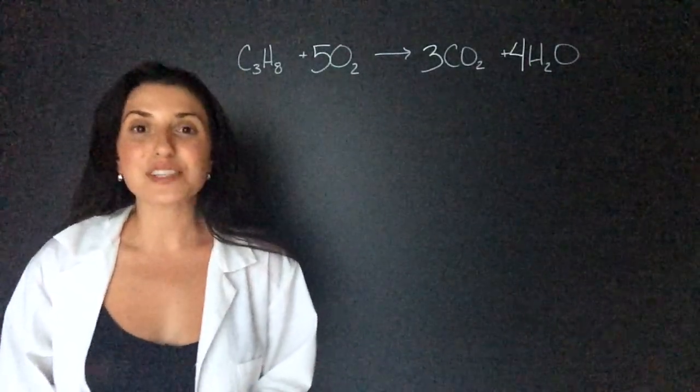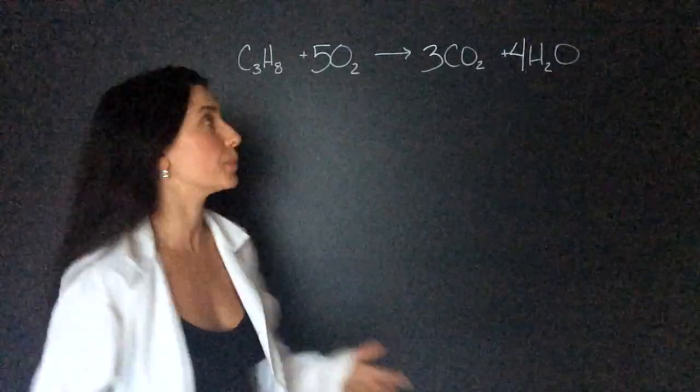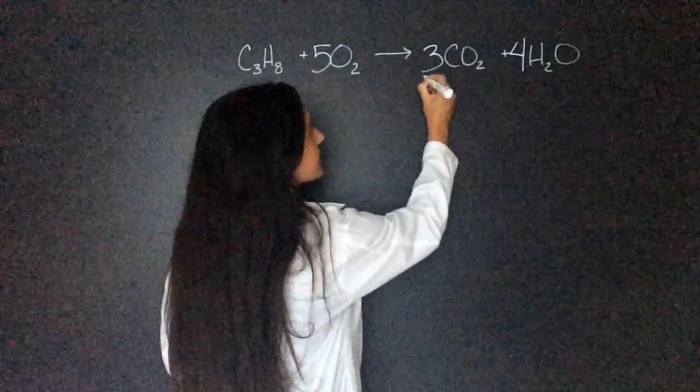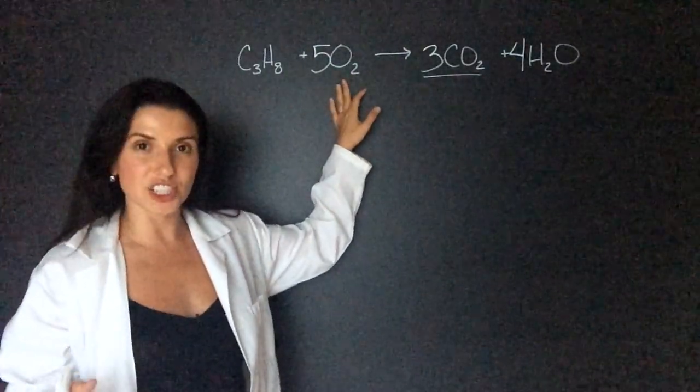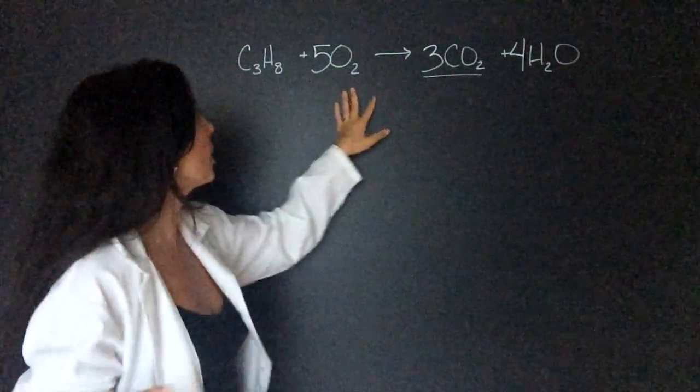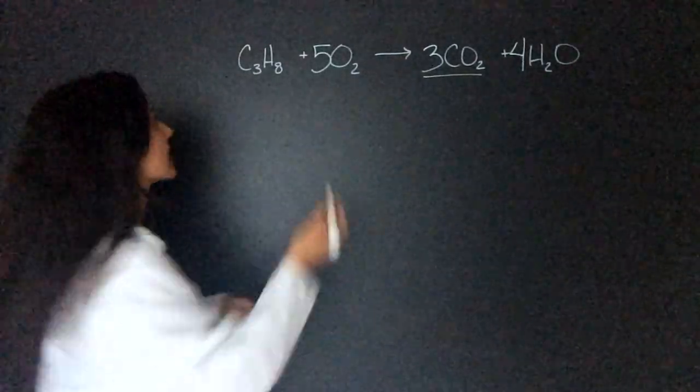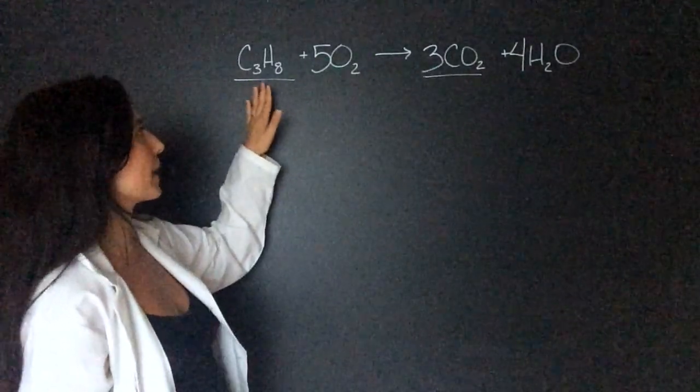Now to find the theoretical yield, the question is asking us for carbon dioxide, so this is what we're looking for. It told us that the oxygen is what's in excess, and we'll learn about limiting reagents tomorrow, but that just tells us that once the propane runs out the reaction will stop. So we need to compare propane and carbon dioxide.